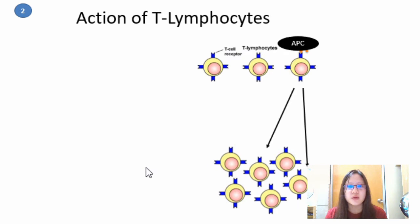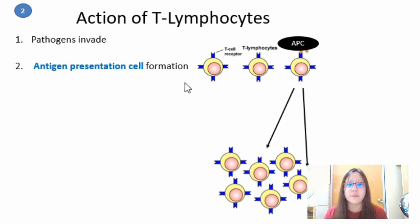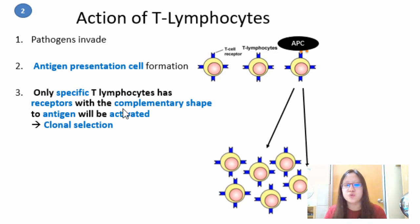After maturation, when specific pathogens invade, antigen presentation occurs. The macrophage engulfs the pathogen and presents the antigens on its cell surface. Then only the specific T lymphocytes with receptors complementary to that antigen will be activated.